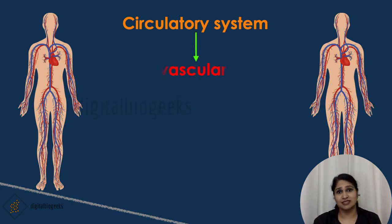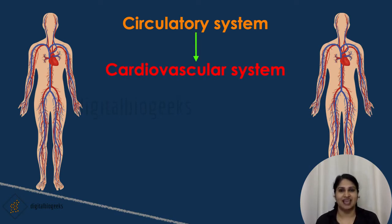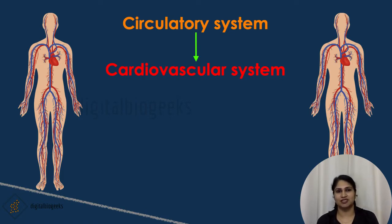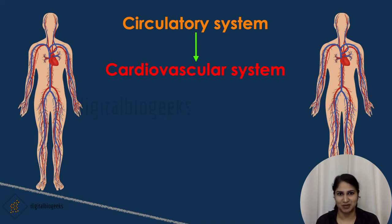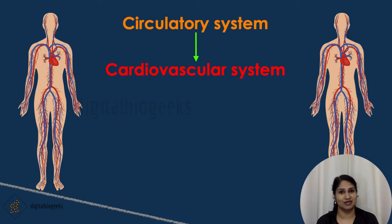The circulatory system is also known as the cardiovascular system. In this video I will be covering the entire cardiovascular system. There is a subunit in the circulatory system which is the lymphatic system — we will provide another video on that. Now back to our topic, the cardiovascular system.